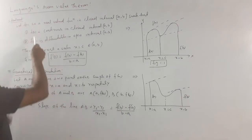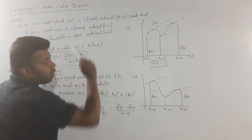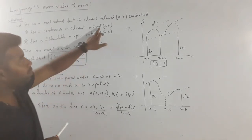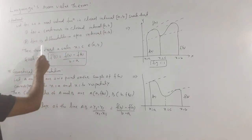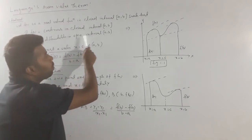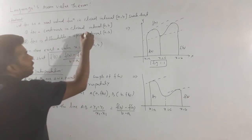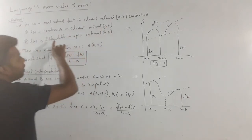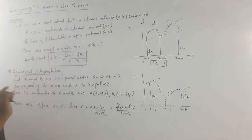First, f of x is continuous in the closed interval a, b. How is f of x continuous? On the closed interval. Similarly, f of x is differentiable on the open interval a, b. So we check: continuity on the closed interval, differentiability on the open interval. When both data conditions are satisfied,